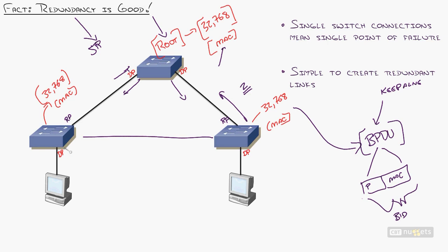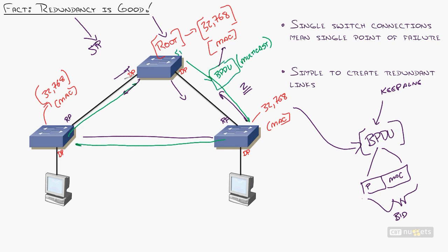The spanning tree algorithm finds the best way to reach the root, then instructs switches to block whatever is left over. BPDUs are multicast by design — they flow not just to a directly connected switch but through it, allowing switches to identify loops. When switch one's BPDU comes back around to switch one, it knows: 'I sent it out this port, it came in here — there's a loop.' All switches light up their root ports, and the redundant link goes into blocking state.